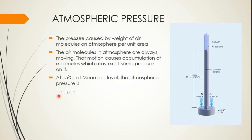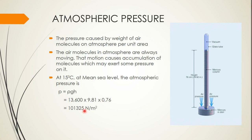We measure the height of the mercury level to calculate atmospheric pressure. The formula is P = ρgh, where ρ is the density of mercury, 13600 kg/m³, g is 9.81 m/s², and h is the height from the barometer, which is 76 cm, or 0.76 m. This gives us 101325 N/m², which is 101325 Pascal, or 101.325 kiloPascal.